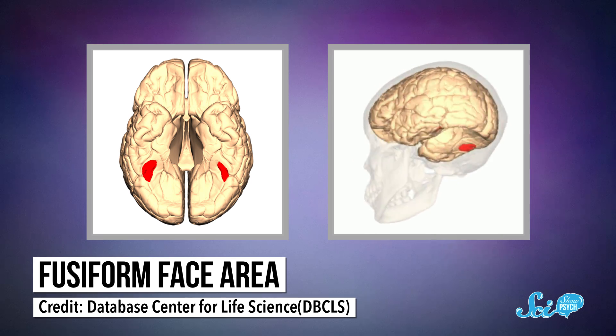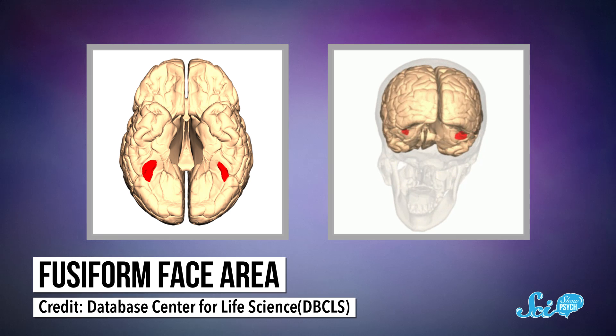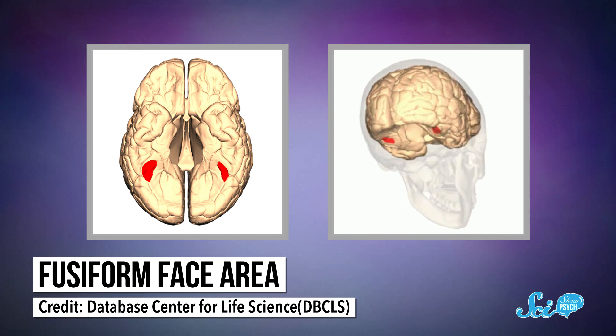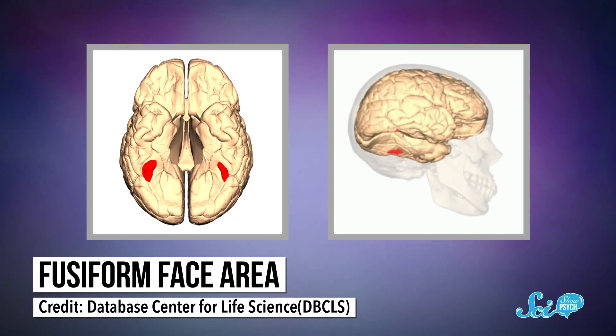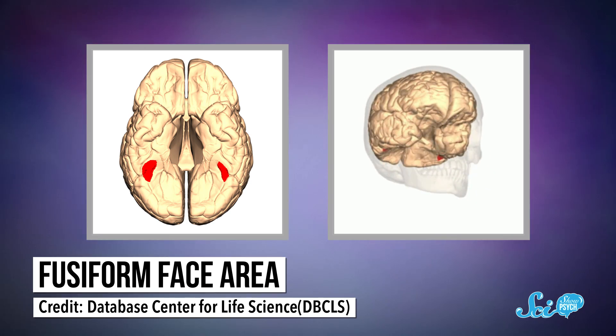The FFA is tiny and located in the brain's temporal cortex, which is generally responsible for object recognition. Since faces are special, they get their own private real estate there.